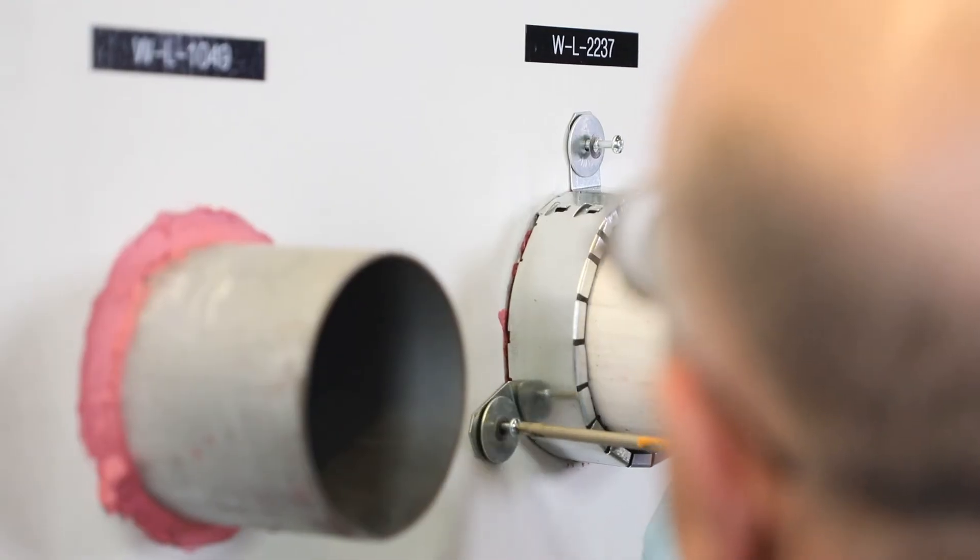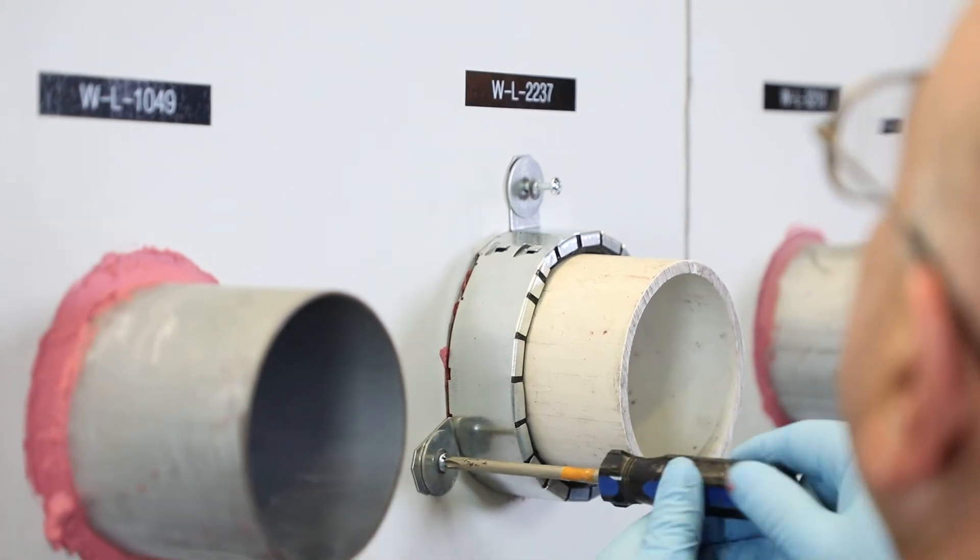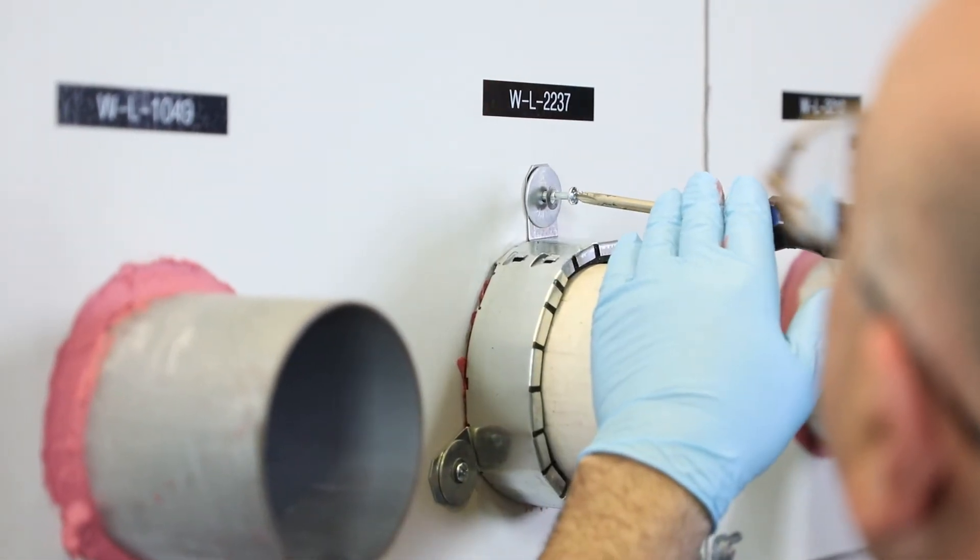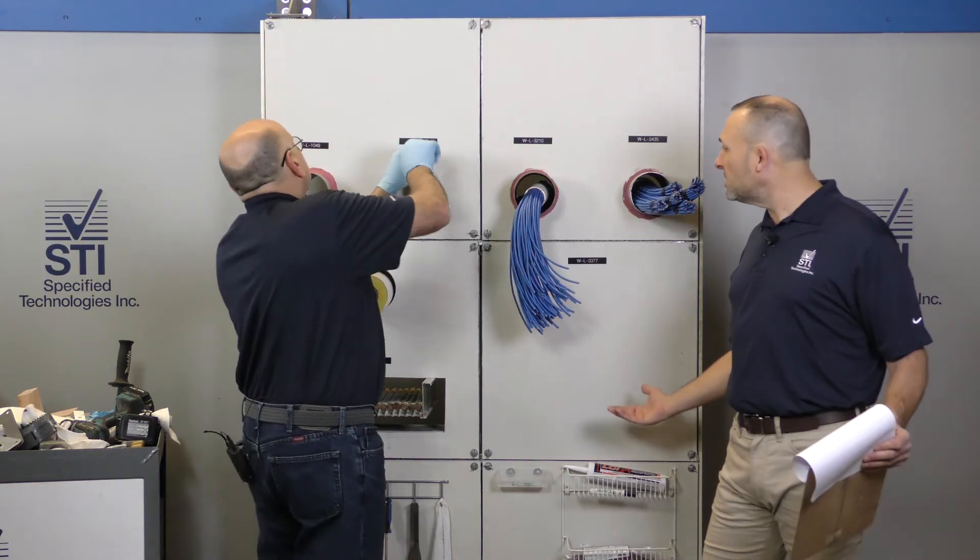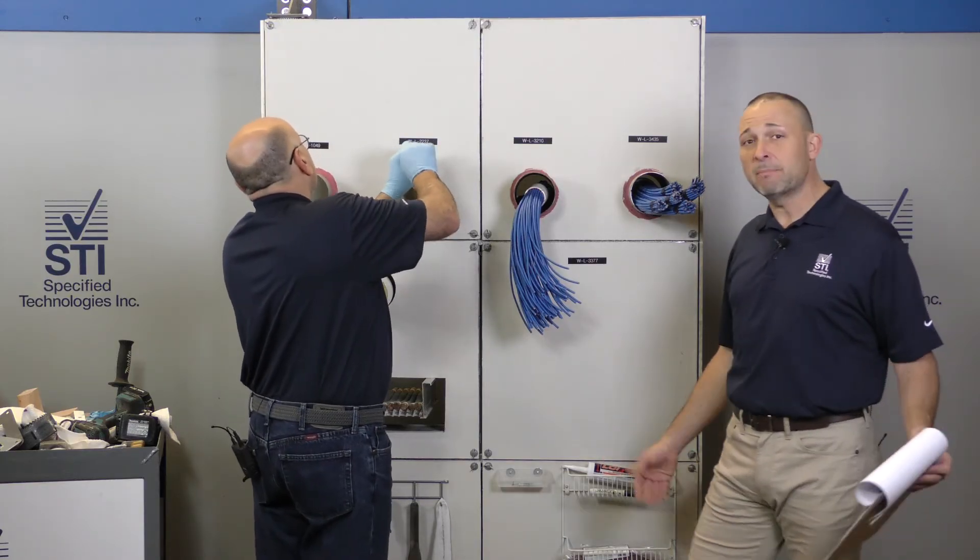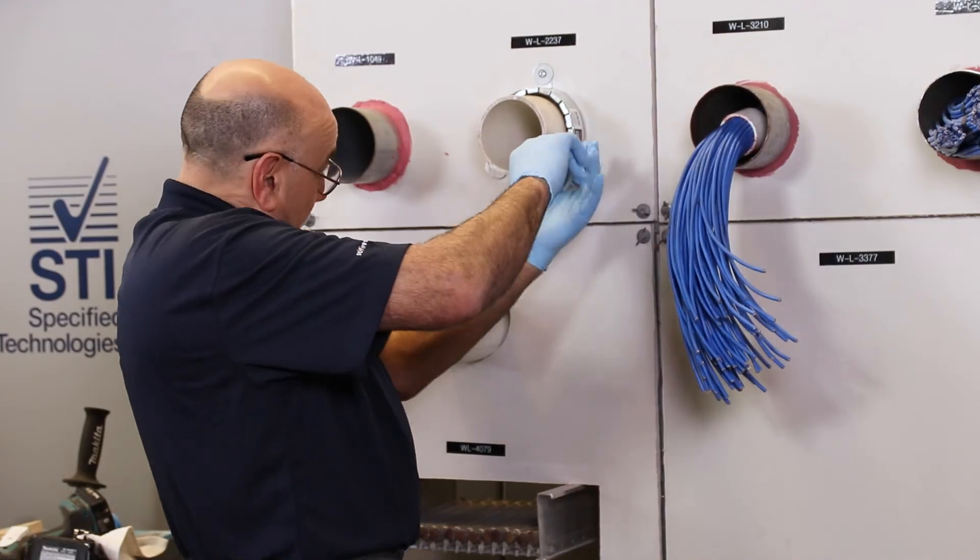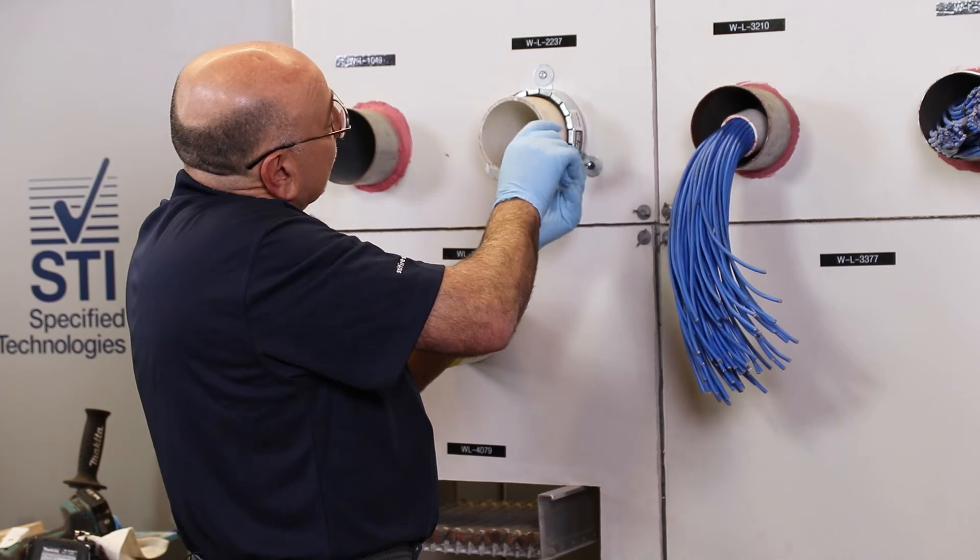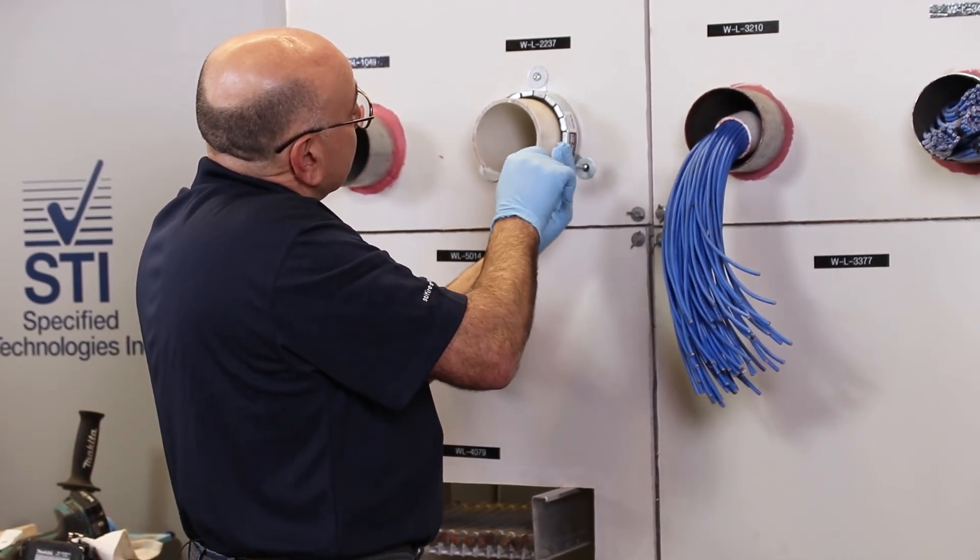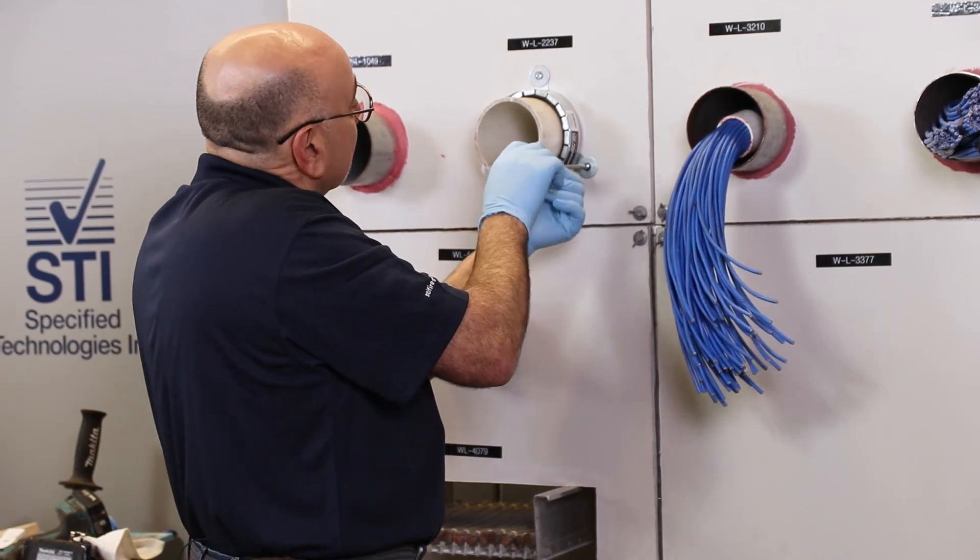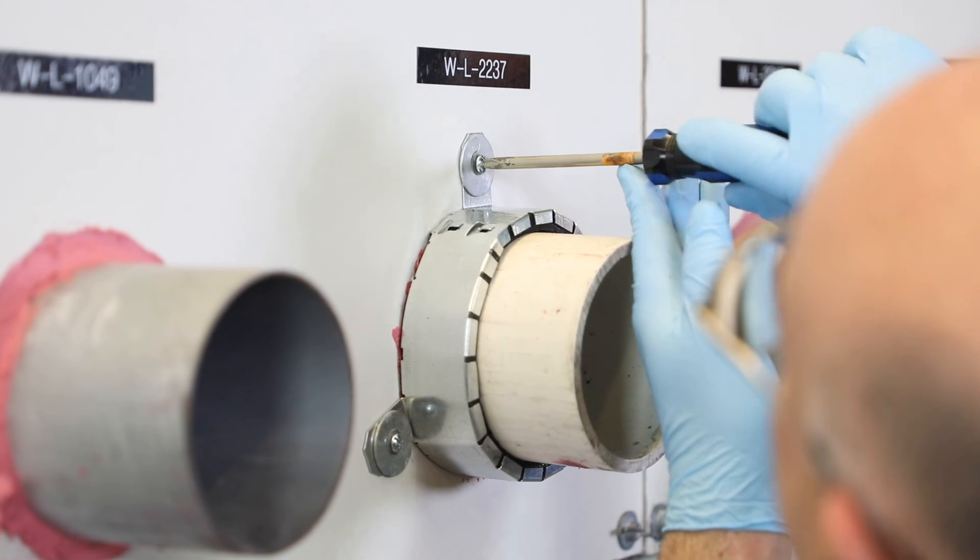Now it's worth mentioning that we needed this extra intumescent because we have such a large opening. This is a four inch opening. When you are about two inches or under, we do have caulk-only systems for plastic pipe. And then we even have some caulk-only systems for three inch plastic pipe in certain assemblies like concrete floors, as long as your hole is big enough and you have a minimum depth of sealant. But when you're dealing with anything four inches and over, you're going to need some intumescent wrap strips or some kind of factory collar for sure.